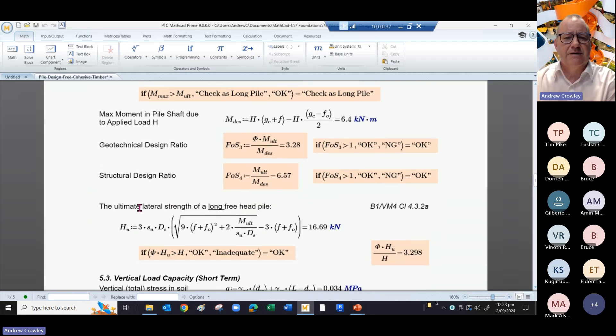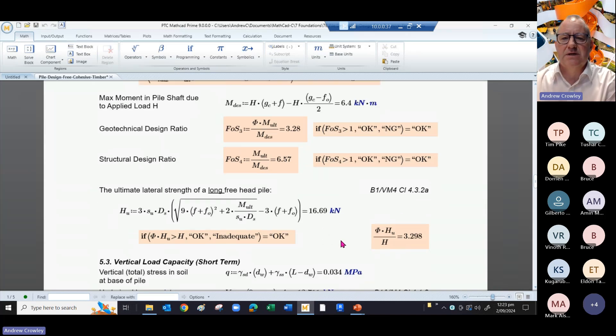The lateral strength of a long freehead pile is derived from that formula given in B1/VM4 Clause 4.3.2a, and that works out as 16.9 kilonewtons, and that tells me it's okay.